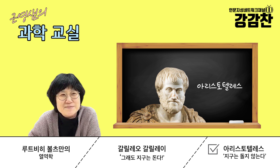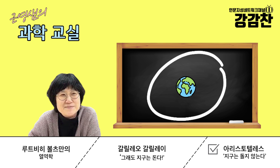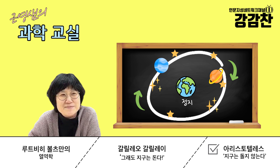아리스토텔레스의 세계는 어떻게 돼있냐면, 가운데 지구가 있고 천구가 있습니다. 이 천구에 별들이 박혀있는 거예요. 천구, 즉 하늘에 천장이 있고, 여기에 금성 같은 행성들도 박혀있습니다. 지구는 가운데 있고 운동하지 않아요. 누구만 운동하냐면 천구가 도는 거예요. 지구는 가만히 있고 천구만 도는 거죠.